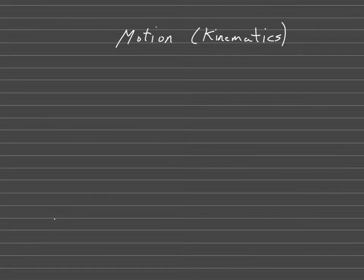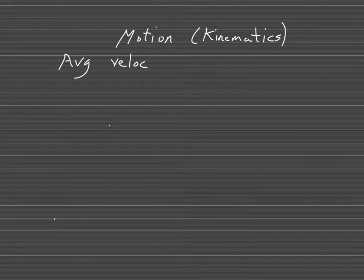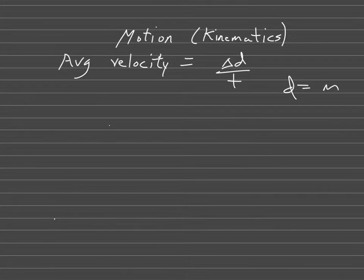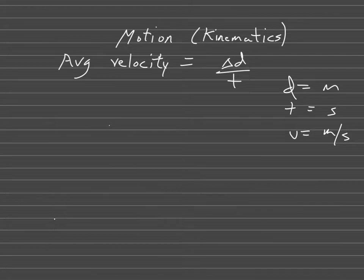So far we've covered average velocity. We know that velocity is how fast something is going — it's the rate of change of displacement over time. Our equation for that is Delta D over T, the change in displacement over time. Displacement is measured in meters, time is measured in seconds, and velocity has units of meters per second.